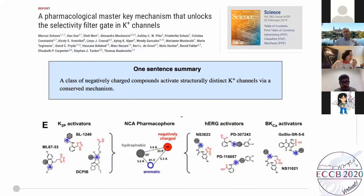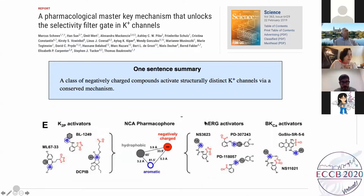This 2019 paper describes how different activators of one kind of channel — K2P channels (two-pore domain potassium channels) — also activate another kind of channels such as hERG and BK, and vice versa. Why? Because they share a pharmacophore composed of a negatively charged group and a hydrophobic-aromatic group. In each drug, the negatively charged group and the hydrophobic-aromatic group are separated by average distances and angles, and with this the molecule faces its charge to the ion pathway — attracting potassium ions to flow more frequently.